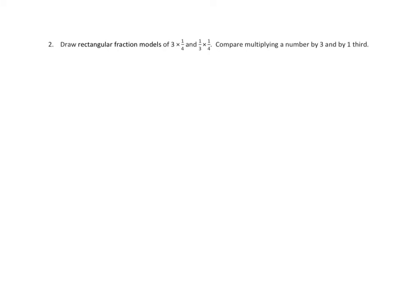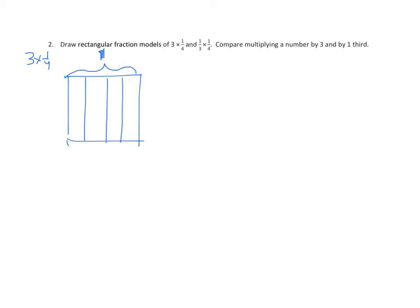This is an interesting problem — it doesn't appear in your homework, but conceptually it's interesting, so I'm going to include it. I want to compare two models: a rectangular fraction model of three times one-fourth and one-third times one-fourth — comparing multiplying a number by three versus one-third. For three times one-fourth, I make my rectangular model, partition it into four equal parts, and shade three out of four. That's one-fourth plus one-fourth plus one-fourth equals three-fourths.